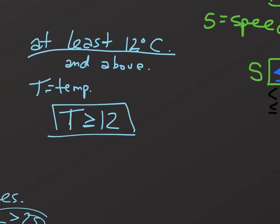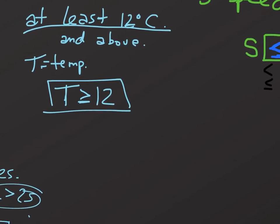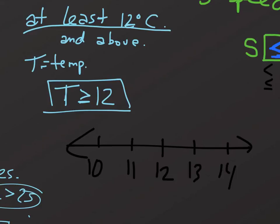Let's try this one here, where the temperature has to be greater than or equal to 12. I'll start off by drawing my number line. Put a 12 in the middle. A couple more ticks on each side. So, we've got 13 here, 14, and then 11 and 10 down here.